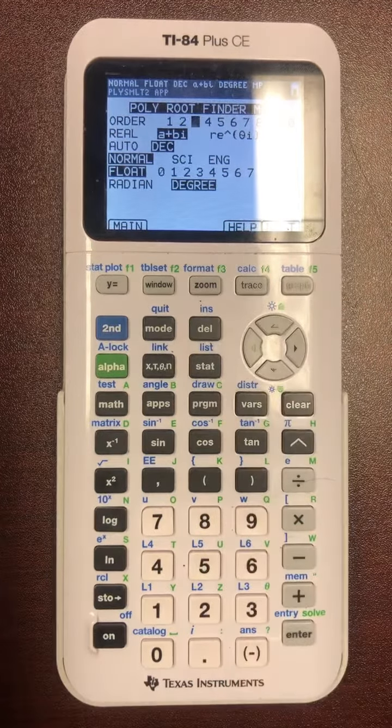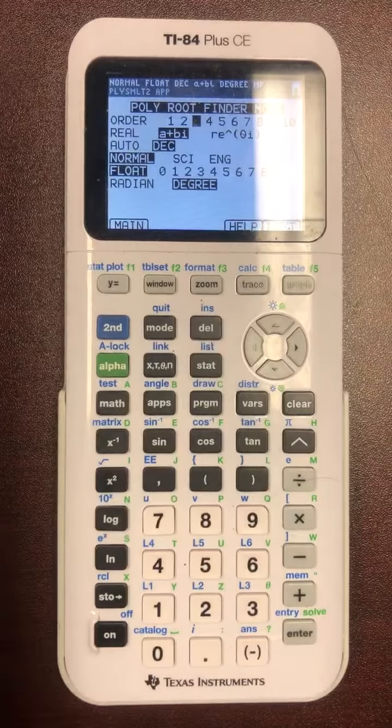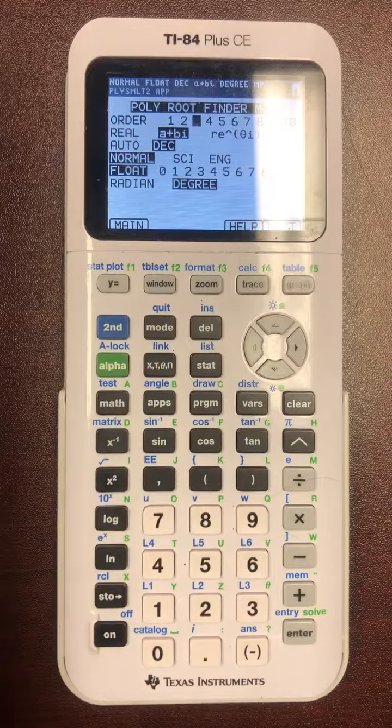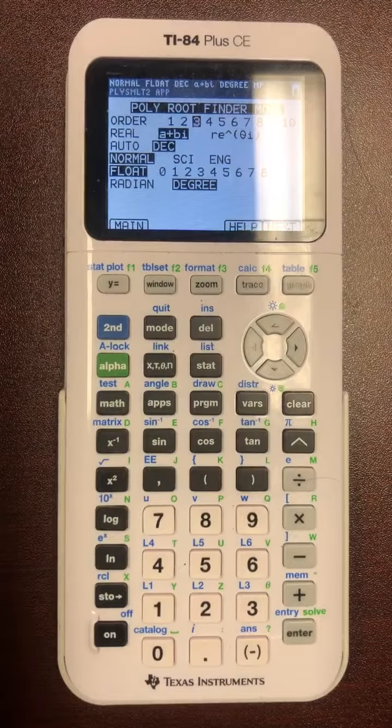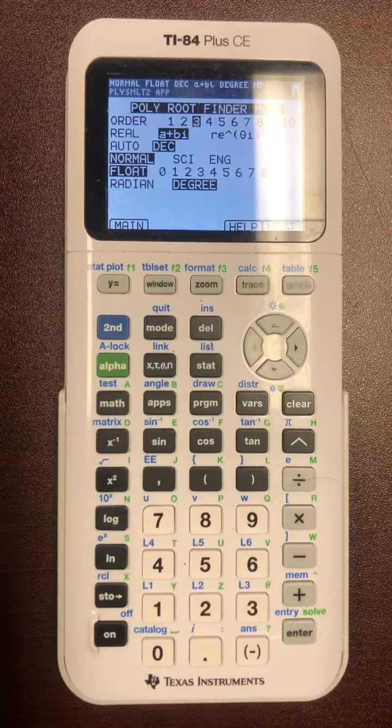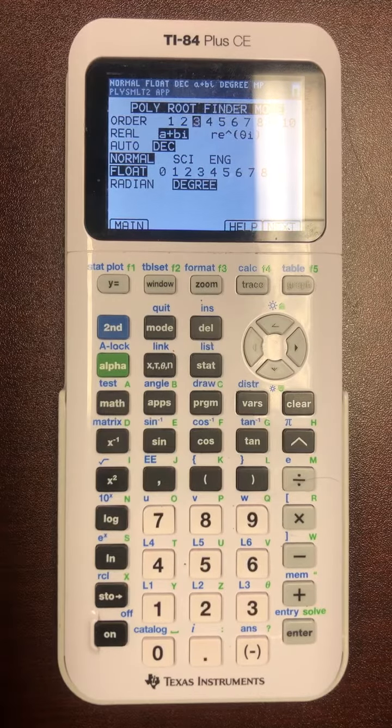In the ACT calculator guide that you have, one of the problems says as follows: One solution of the equation 8x cubed plus 12x squared minus 5x plus 6 equals 0 is x equals negative 2. Which of the following describes the other two solutions?